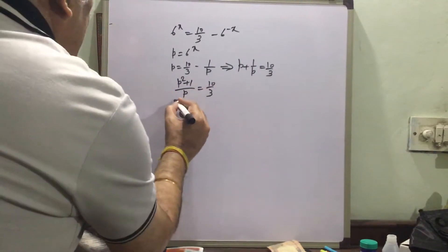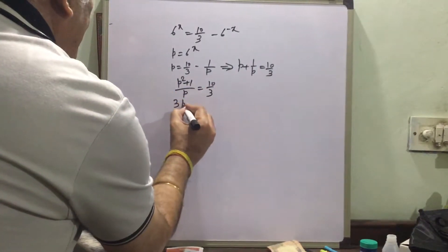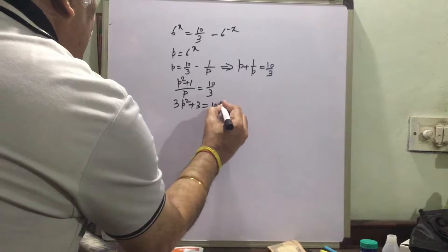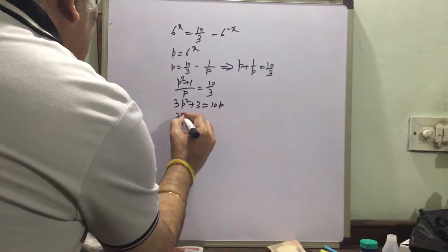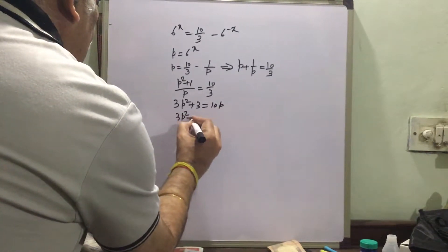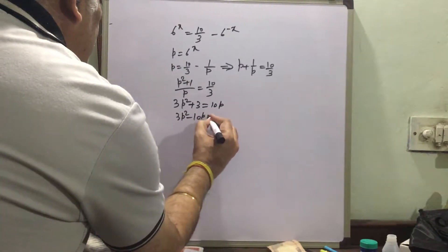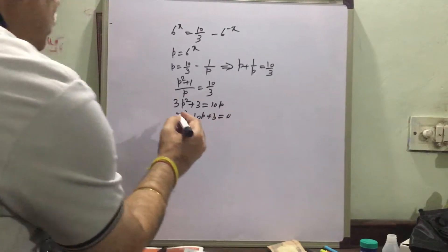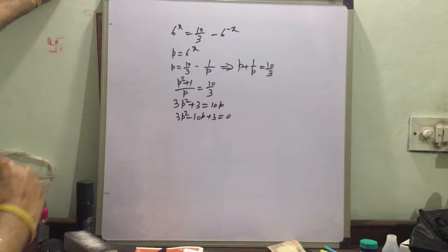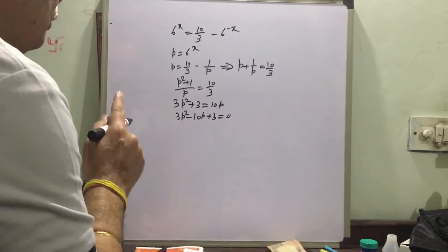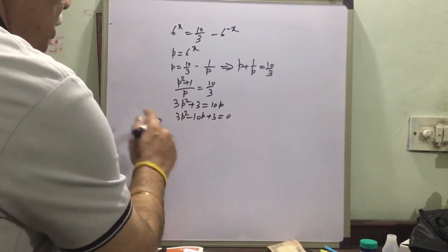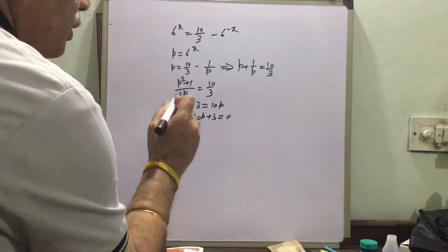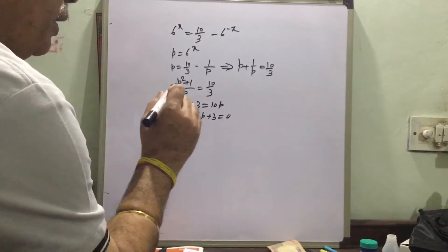We get p squared plus 1 upon p is equal to 10√3. So we cross multiply and get p squared plus 3 is equal to 10√3·p, or 3p squared minus 10√3·p plus 3 equals zero. Now, 3 times 3 is 9, so we have to find factors of 9 whose sum is 10, because the sign is plus. So the factors are 9 and 1.